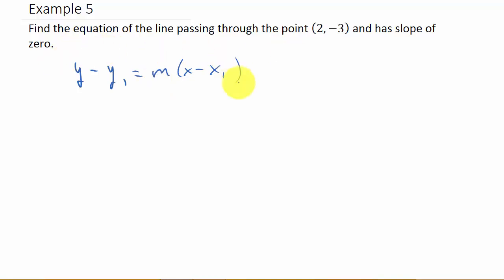Since it says that you have a slope of 0, well we know that is a horizontal line. A line that has slope 0 is horizontal.